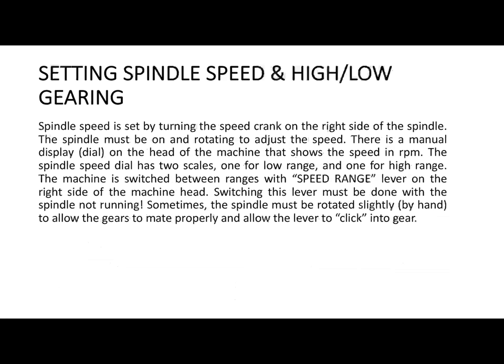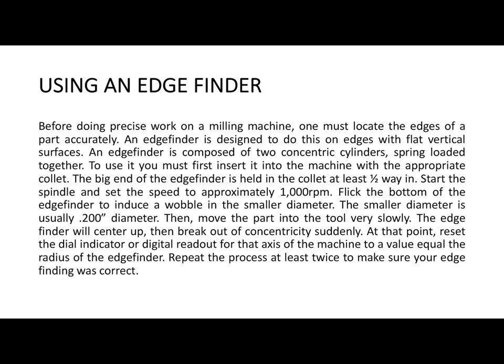Setting spindle speed and high or low gear — depending on the workpiece, you have to decide what speed to run the machine at. For example, if you are using soft materials like wood or plastic, the speed should be less, while if you are using aluminum the speed has to be higher. The spindle speed can be adjusted on the machine — we will look at this in the video I will post regarding how to use the machine.